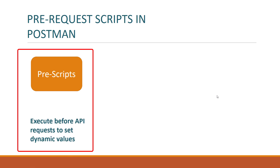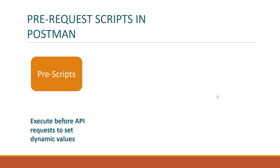You can use these scripts to set dynamic values for your API request. For example, you are working on a project and you have an API which needs a dynamic parameter — one that needs to be unique every time you execute that API. One way is to manually change the value before each execution, but that is not a good option. Instead, you will create a pre-script which will generate a dynamic value for your API, and then the API will take that dynamic parameter and execute with it.